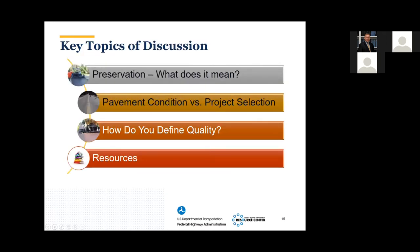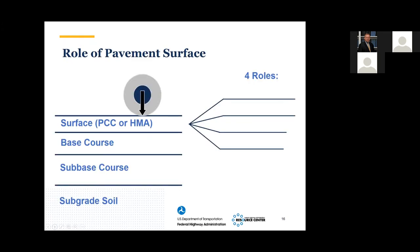We need to know what our pavement condition is before we can apply any preservation treatment. The role of the pavement surface serves four roles: providing a smooth pavement, a skid-resistant riding surface, keeping moisture out of the sublayer, and load distribution.